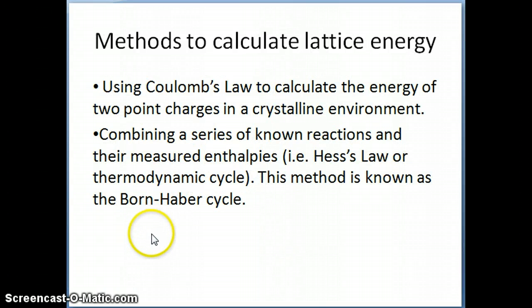There are two ways you can calculate lattice energy. Lattice energy is important because if we know lattice energy we're able to determine how strong an ionic bond is. There's a couple of methods. One is using Coulomb's law, and Coulomb's law is an equation that represents the strength of electrostatic attraction between two point charges, so we can use that to model the strength of an ionic bond in a crystalline environment. We can also use a more experimental method of measuring lattice energy, and this would require a Hess's law type of approach.